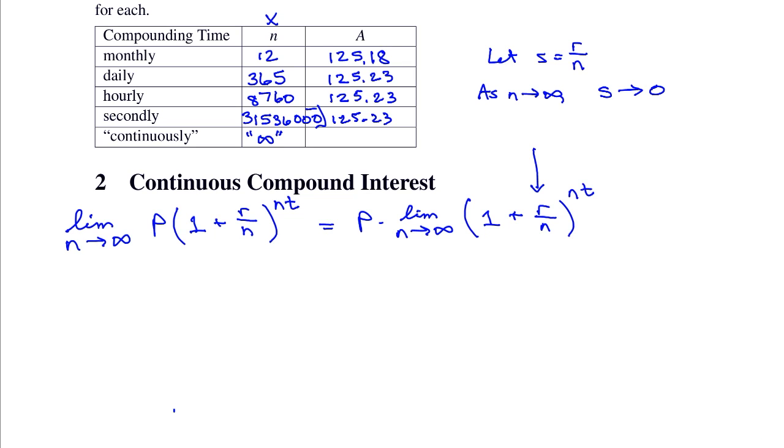Now, last question here. If S is equal to R over N, what is N equal to? Solve for N. R over S. So this is equal to P times the limit as, I'm going to do the S here. S goes to 0, because that's our new variable for the limit. 1 plus S raised to the, now N is going to be replaced by R over S. So this is R over S times T. I'm going to replace the N there.